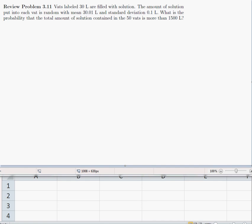We now take a look at a central limit problem involving a sum. We have vats that are labeled 30 liters, but in actuality, 30.01 liters get put in on average with a standard deviation of 0.1 liters.